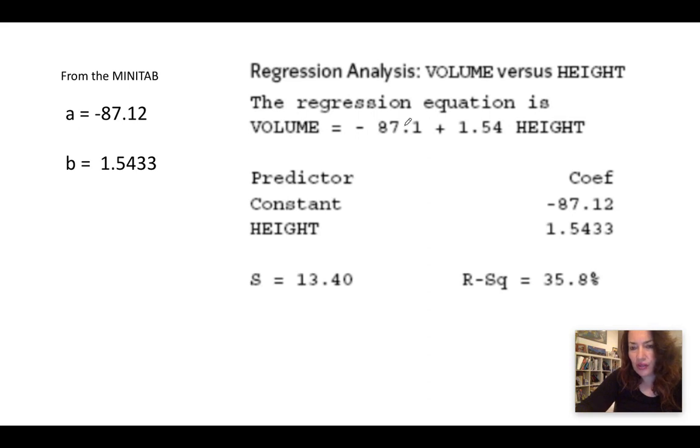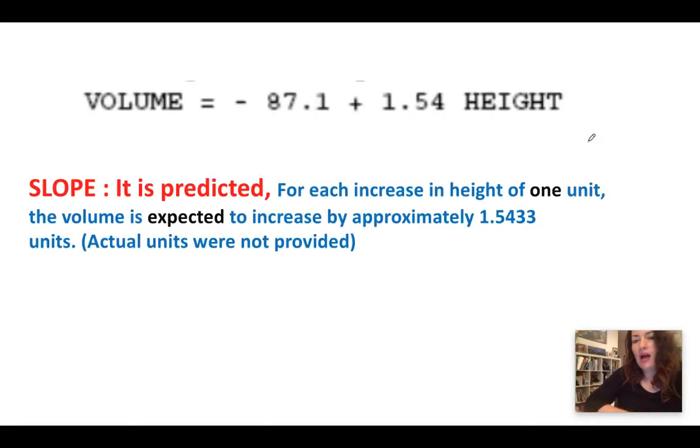Looking at the regression equation, we have the volume predicted equals negative 87.1 plus 1.54 times the height. Now, how do we interpret slope? Slope is interpreted in the following way. We want to start off by either saying it is predicted or on average because we are using an average line.